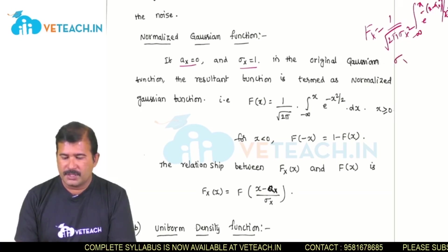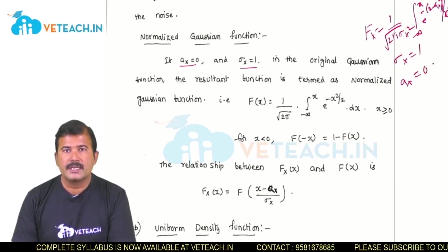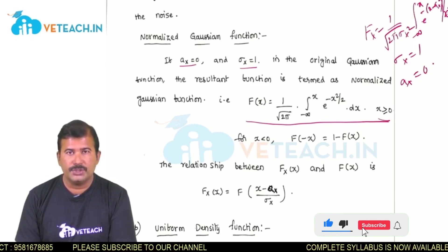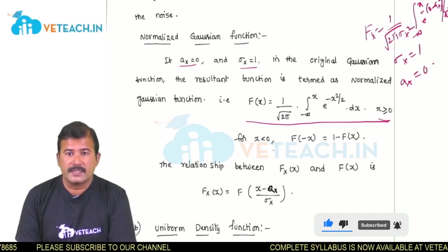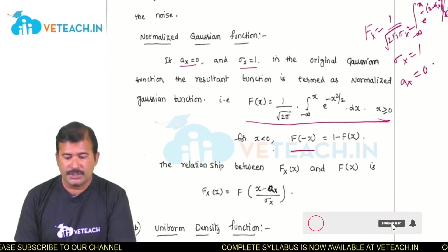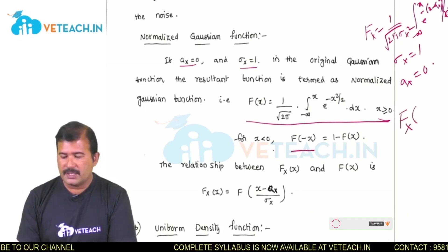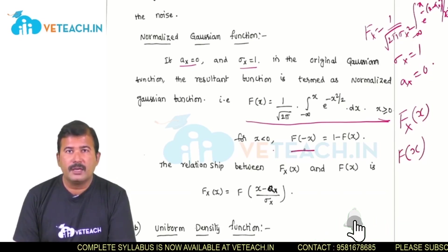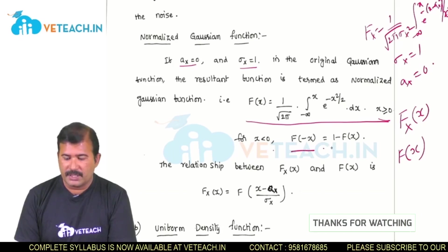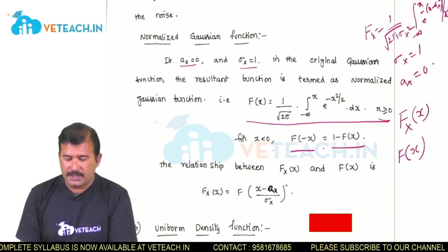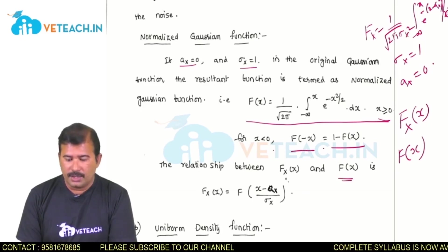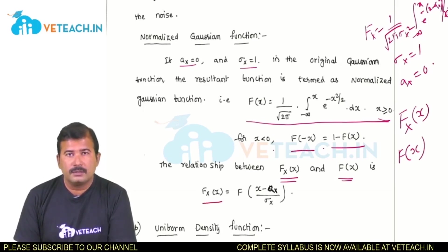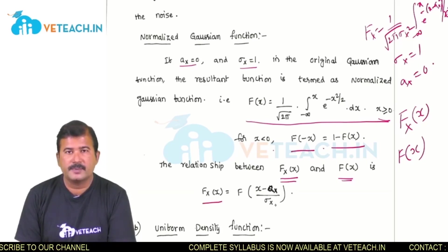If we substitute sigma x equals to 1 and Ax equals to 0, the resultant function is called the normalized Gaussian distribution function, denoted f of x. For x less than 0, the normalized Gaussian density function can be expressed as 1 minus f of x. The general Gaussian distribution function is represented as Fx of x. The relation between them is that Fx of x equals f of x minus Ax by sigma x, meaning we can evaluate the original Gaussian distribution from the normalized function by substituting x minus Ax by sigma x in place of the random variable.